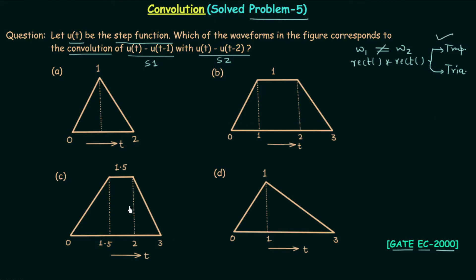You can see there are two options out of four having the trapezoidal waveform. In case two, when both rectangular signals have the same width W, you will get a triangle — and two options are triangles. We need to find out if the two signals have the same width. When you plot u(t) - u(t-1) you get a rectangular signal, and u(t) - u(t-2) also gives a rectangular signal.